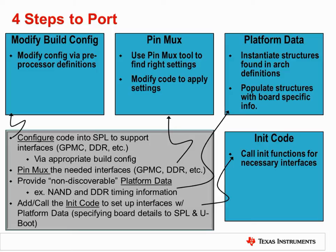The third and fourth steps relate to the modification of board level code in order to support new or modified hardware. Modifying the build configuration will add support for a given interface, but if the external hardware to a peripheral is changed, it may also be necessary to modify the code that controls that peripheral. The platform data may need to be updated — it is a series of C structures that define parameters specific to the various hardware components of a system. Secondly, the initialization function for the interface may need to be modified as well.